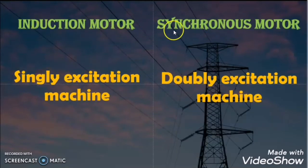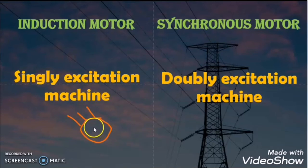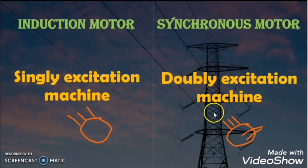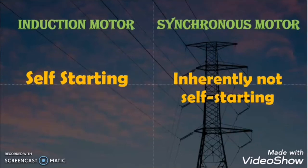The second difference is excitation. The induction motor is a singly excited machine — we give power supply only to the stator winding, and the rotor gets power by induction. But in the synchronous motor, we give two excitations: one AC supply to the stator winding and one DC supply to the rotor winding. So the synchronous motor is a doubly excited machine.